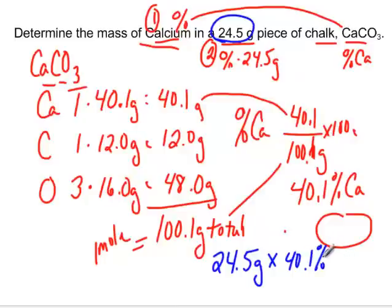Now a couple things. Whenever you have a percent and you're trying to do some math, you want to get rid of the percent sign, and you want to divide by 100. Move that decimal point over. So when you type it in your calculator, it's 24.5 times 0.401. And when you do that, you're going to get your final answer, which is 9.70 grams.